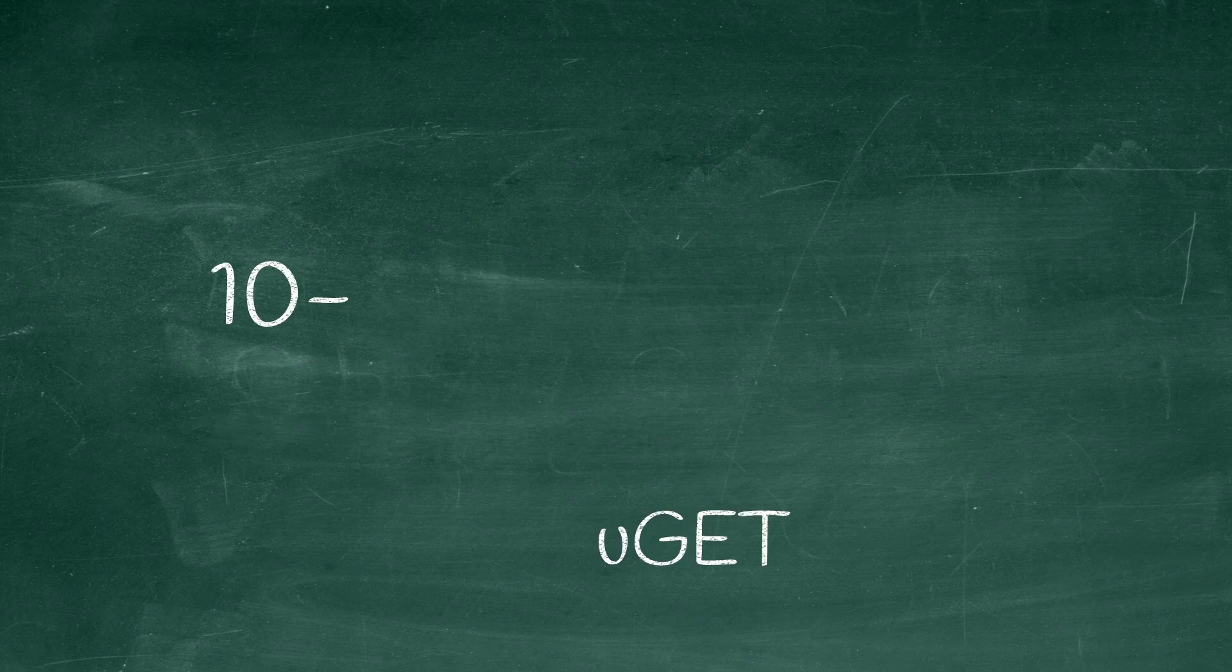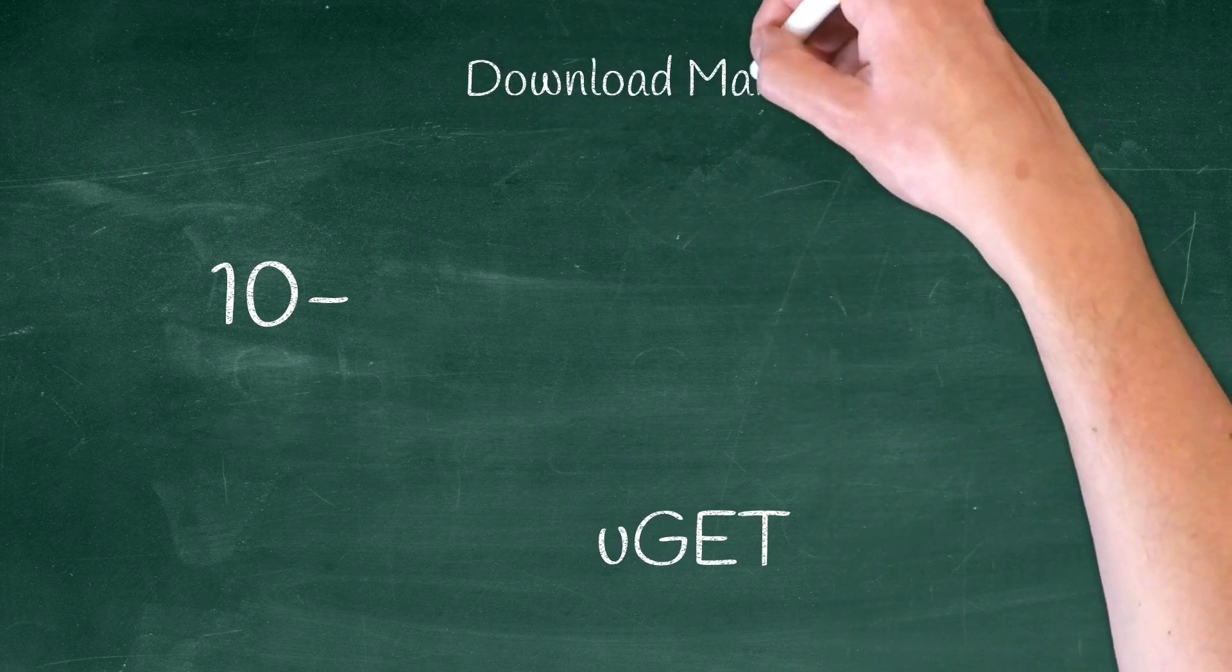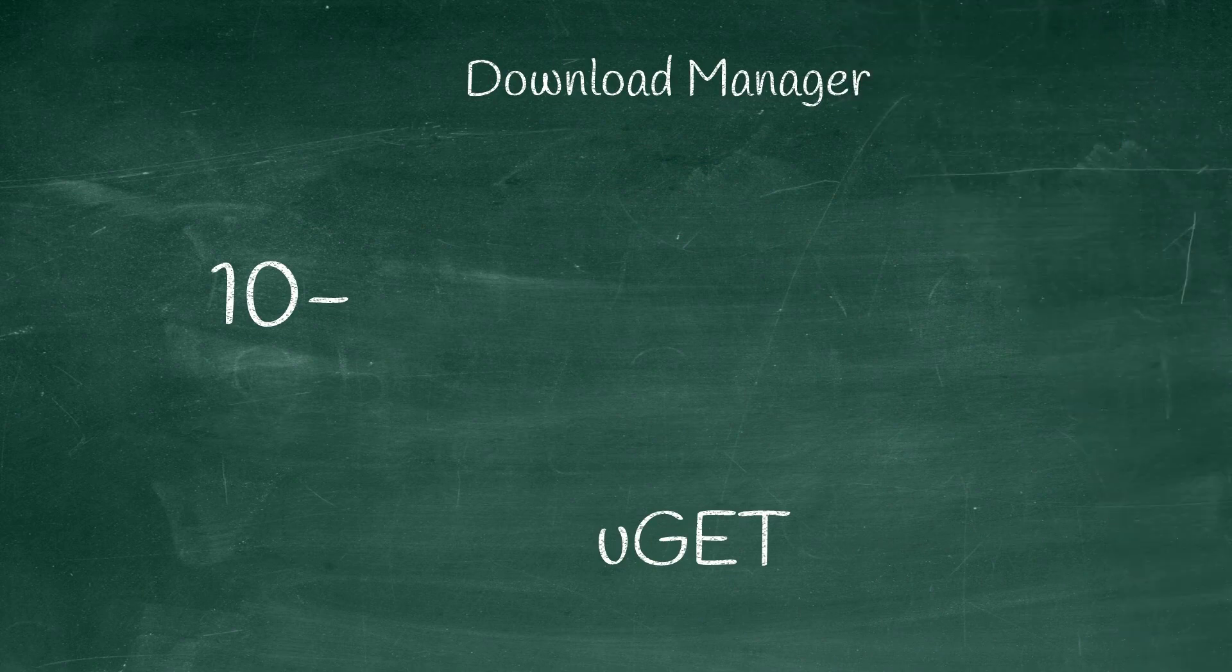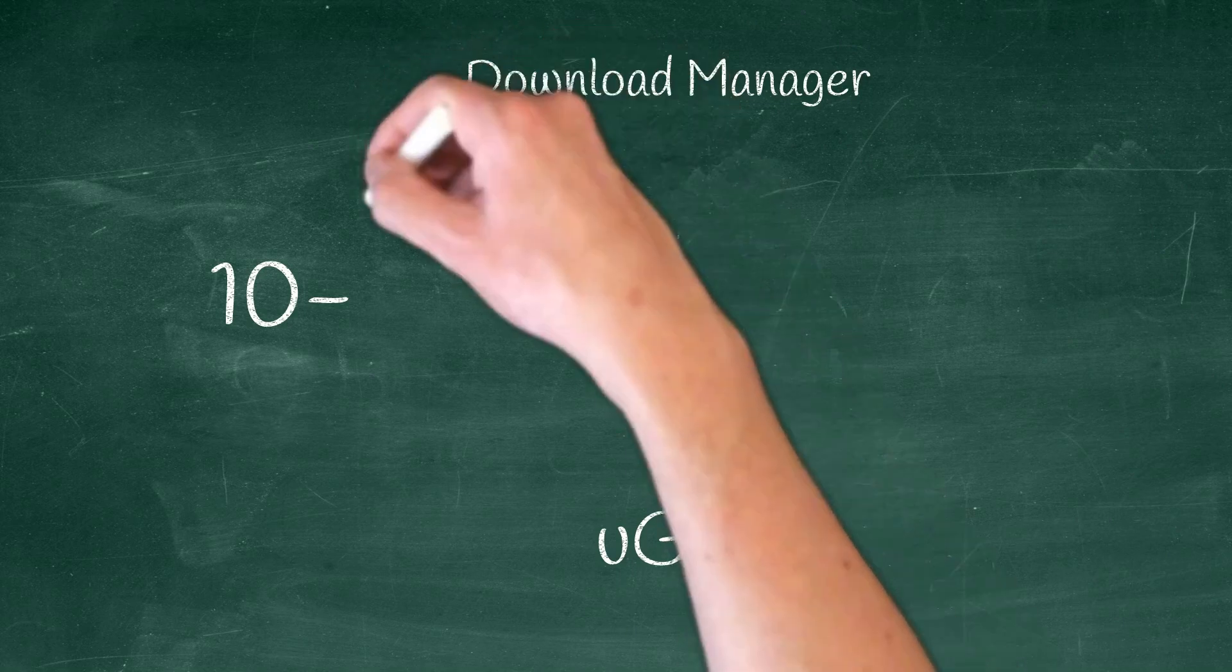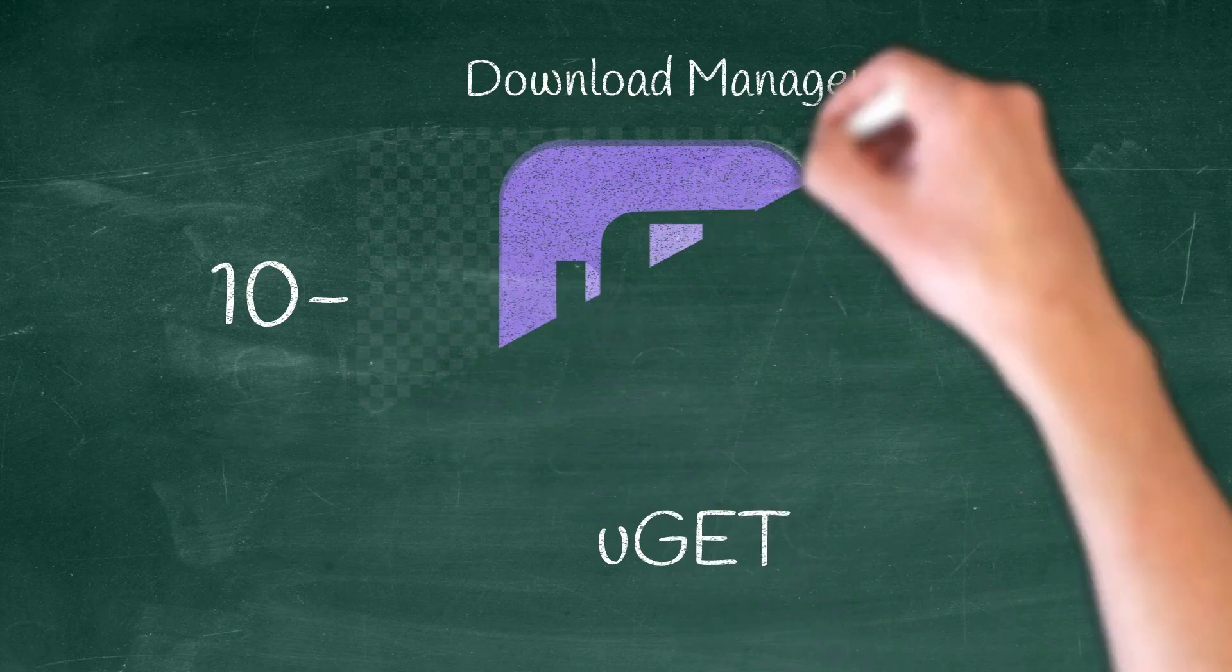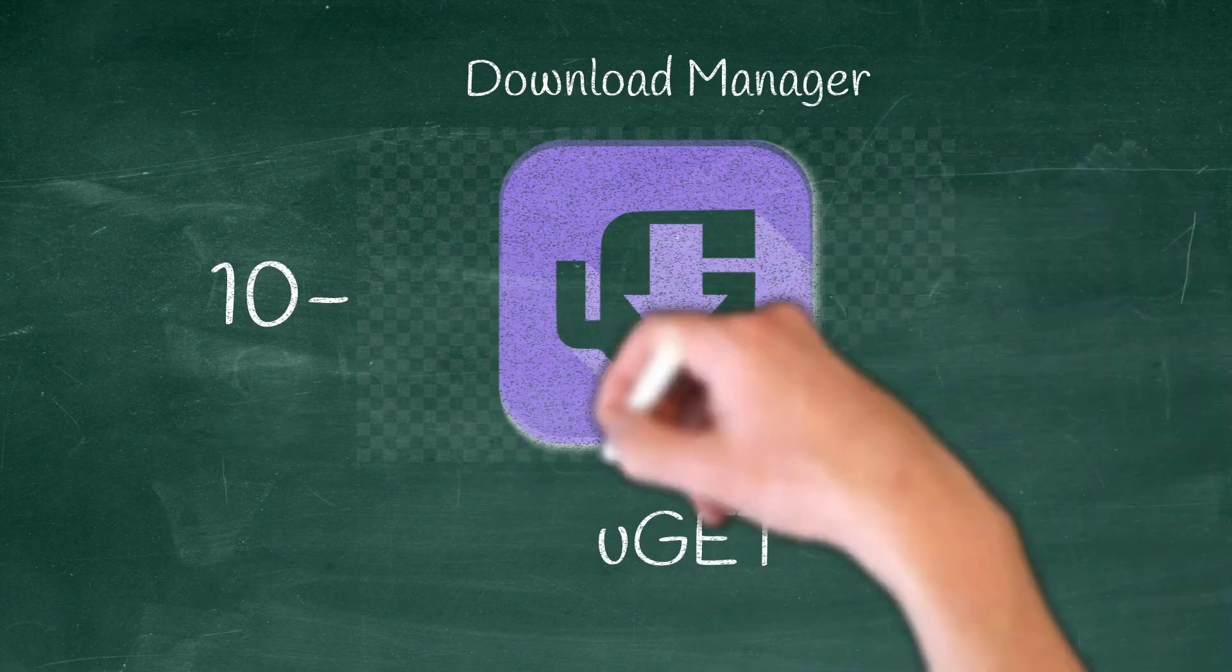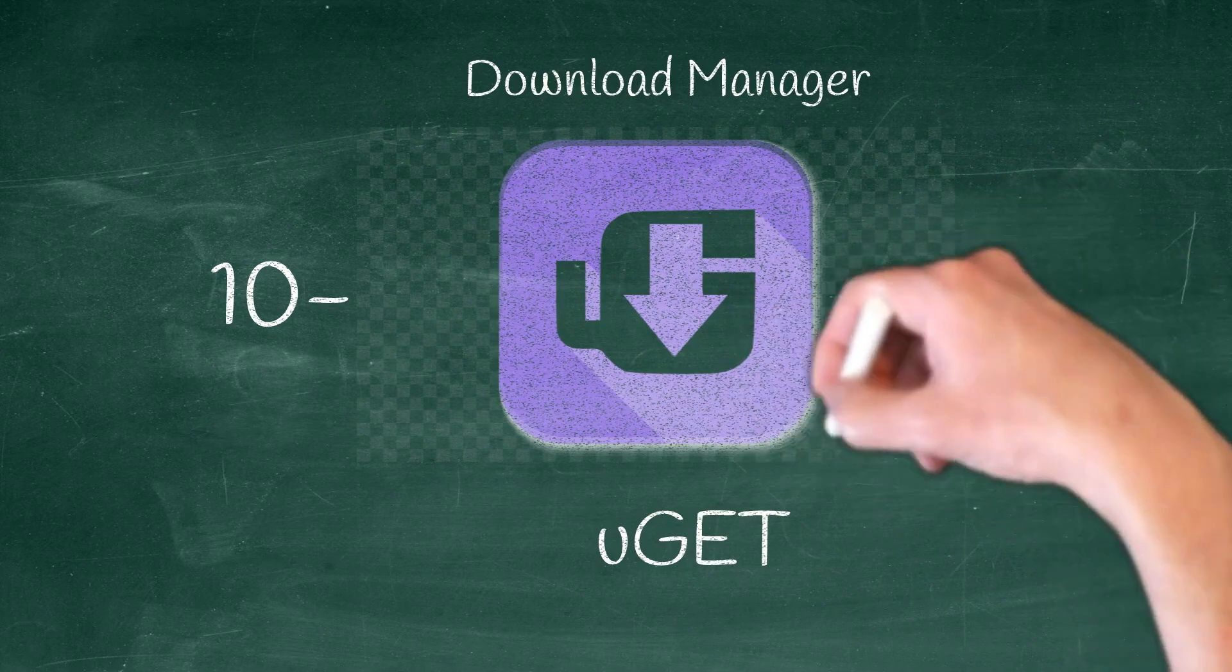Number 10, Uget. Uget is the best download manager I have ever come across. It is open source and offers everything you can expect from a download manager. Uget offers advanced settings for managing downloads. It can queue and resume downloads. It can use multiple connections for downloading large files. It can download files to different directories according to categories and so on and so forth.